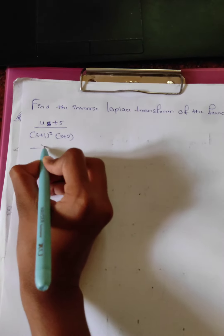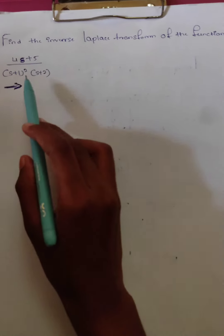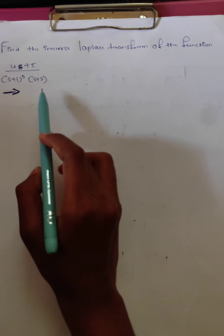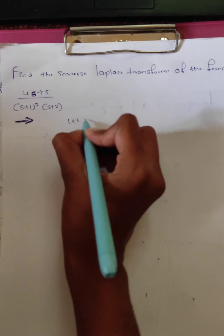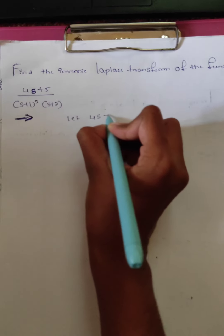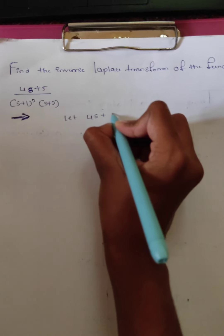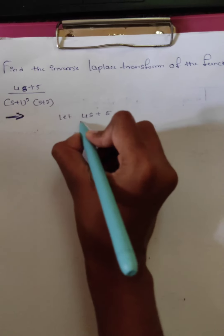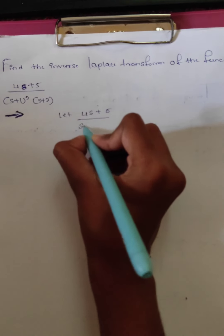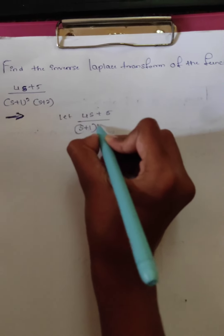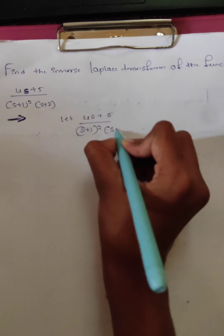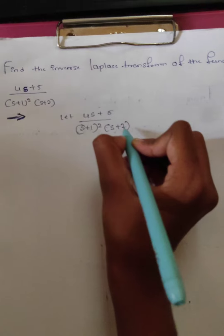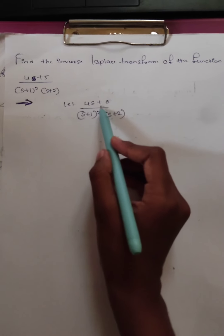Now, solution. In this problem we use the partial fraction method. Let the given expression be 4s plus 5 divided by (s plus 1) whole square, times (s plus 2), using partial fractions.